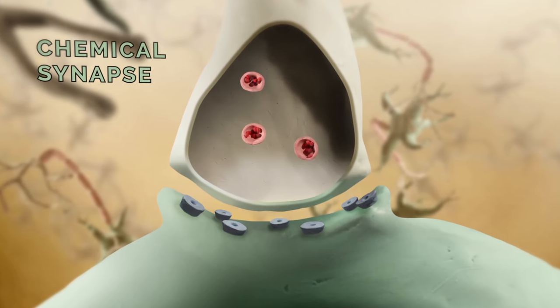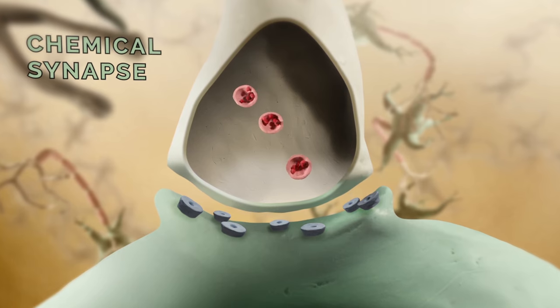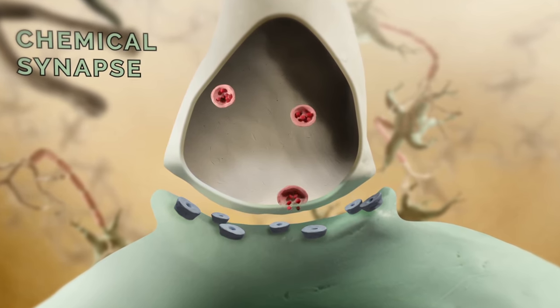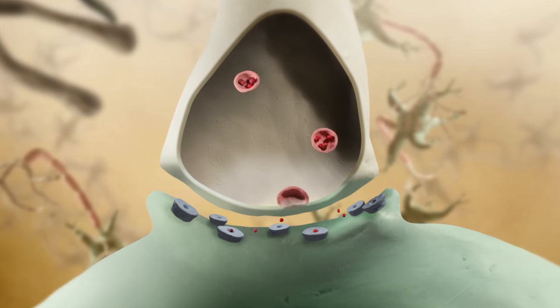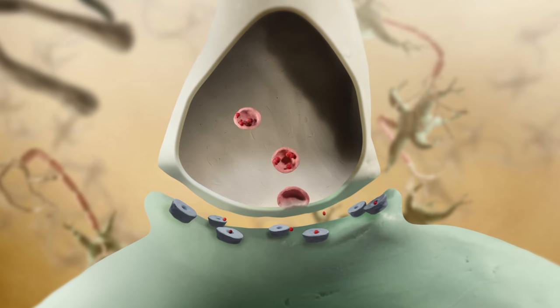This chemical step is slower than transmission across an electrical synapse, but it opens up an enormously diverse repertoire of different and more complex kinds of signaling. And synaptic function plays a critical role in computations performed by neurons.